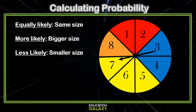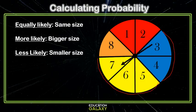More likely means that you have a better chance. So for example, there are more yellows than there are blues. So you are more likely to land on yellow than you are on blue. And less likely means exactly the opposite. So you're less likely to land on blue than you are on yellow.